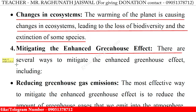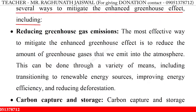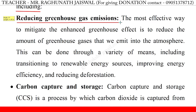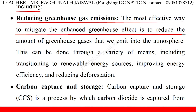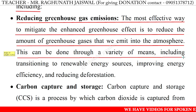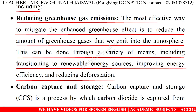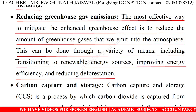Reducing greenhouse gas emissions: the most effective way to mitigate the enhanced greenhouse effect is to reduce the amount of greenhouse gases that we emit into the atmosphere. This can be done through a variety of means, including transitioning to renewable energy sources, improving energy efficiency, and reducing deforestation.